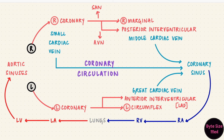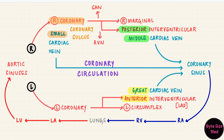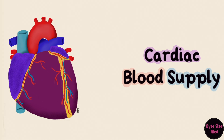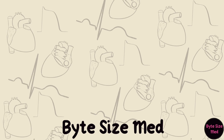To remember which veins accompany which artery: the great cardiac vein is great, so it likes to be up front with the anterior interventricular artery. The middle cardiac vein is okay being in the back with the posterior interventricular artery. And the small cardiac vein is small, but it's in a big sulcus — the coronary sulcus — along with the right coronary artery. And that is the blood supply of the heart. I hope this video was helpful; if it was, you can give it a like and subscribe to my channel for more videos. Thanks for watching!